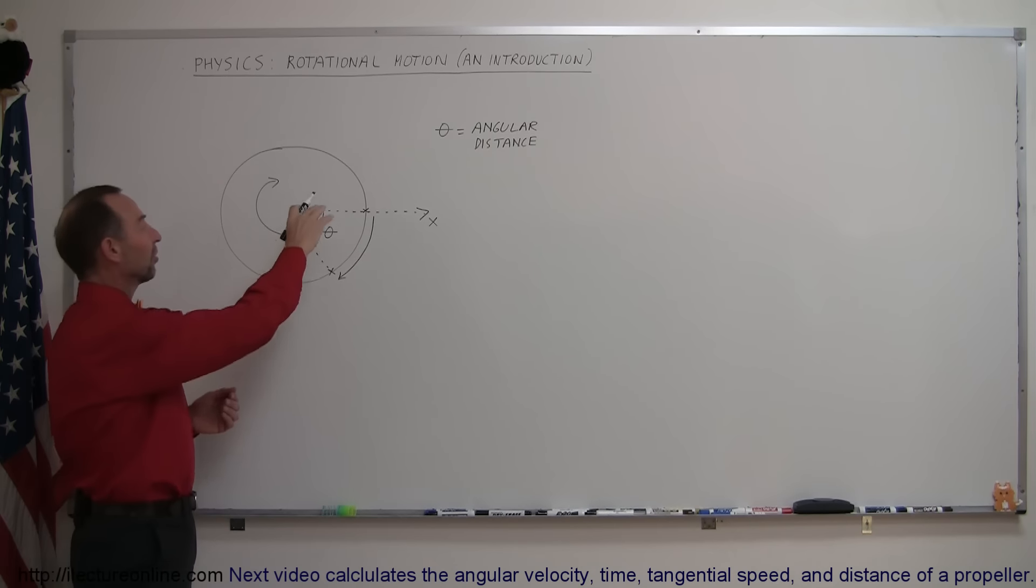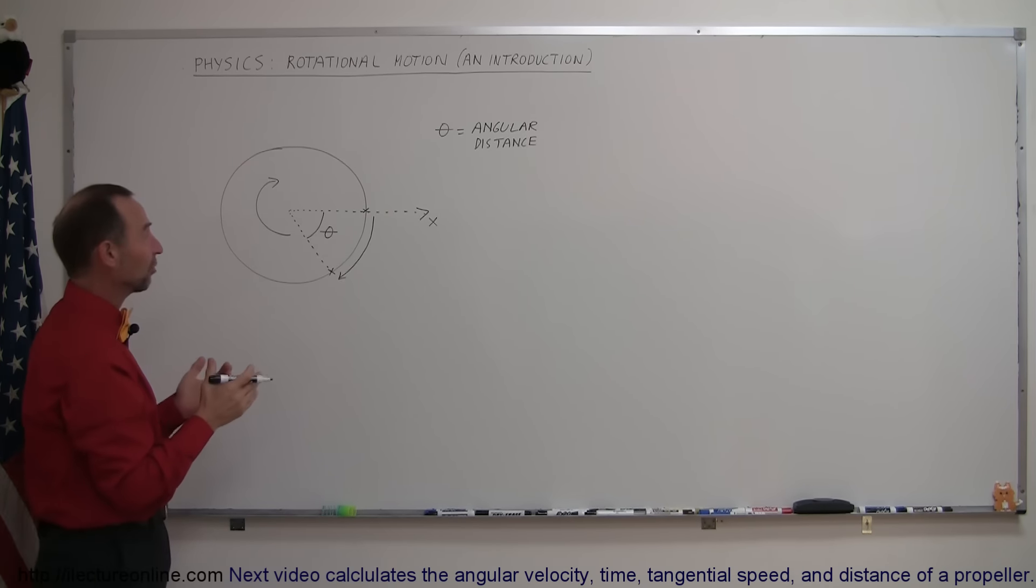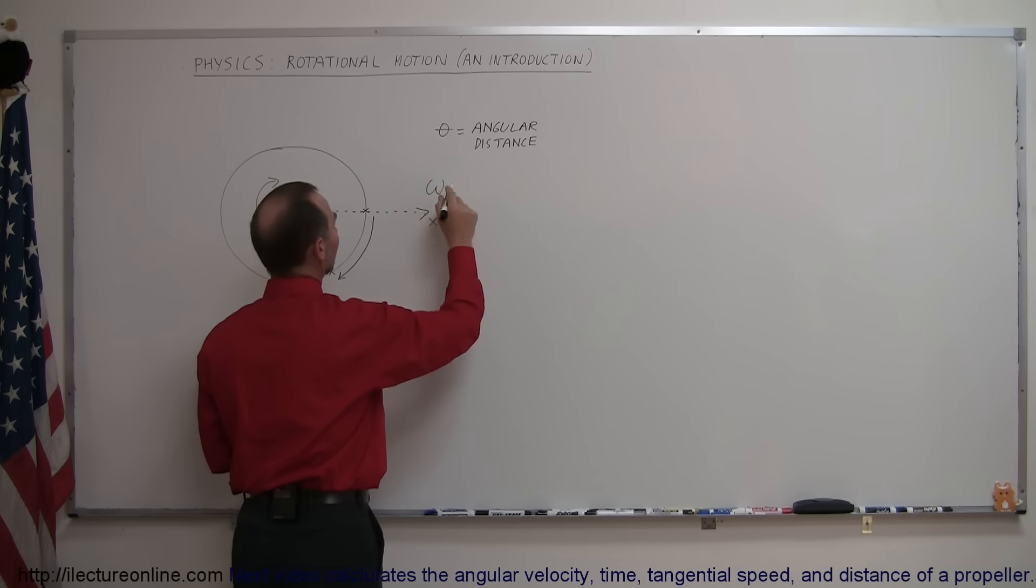Now, how fast is this rotating, how fast is it spinning? The way to express that is how big of an angle per unit time are you covering, and the variable you use for that is angular velocity, and we use the letter omega for that, the Greek letter omega.